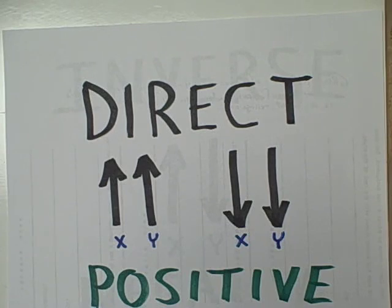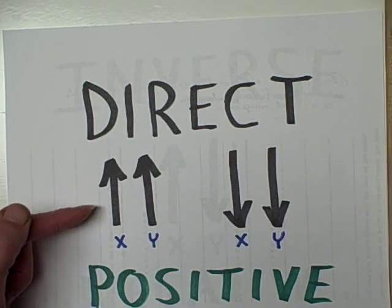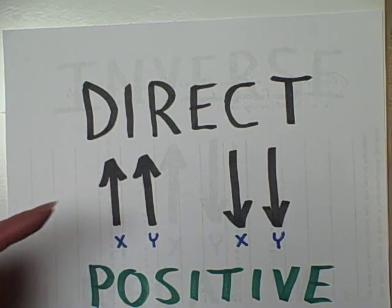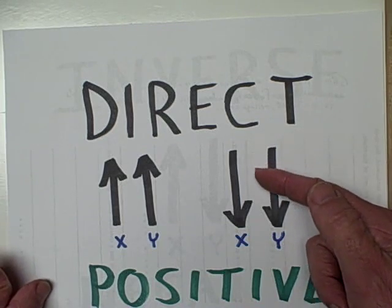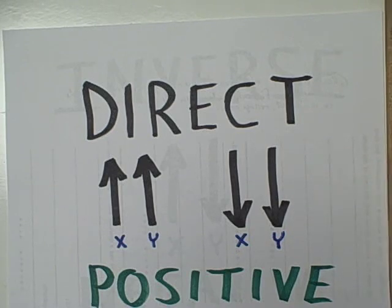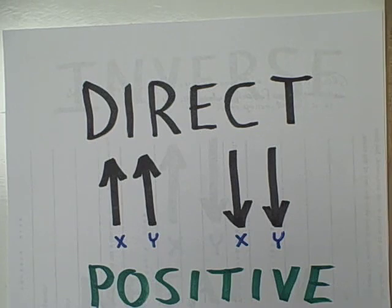Let's first talk about the issue of direction. Some correlations have what we call a direct relationship. In other words, if one variable x happens to be high, then the other variable y happens to be high. Or, if variable x happens to be low, then variable y happens to be low. These two variables move in the same direction, and you can use one to predict the level of the other. We call such a correlation a positive correlation.